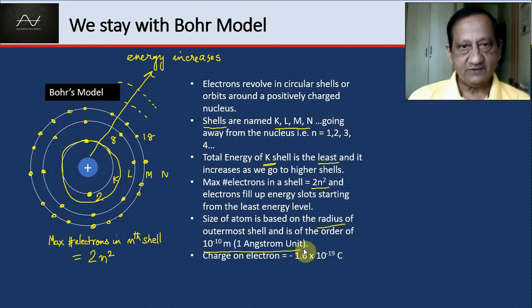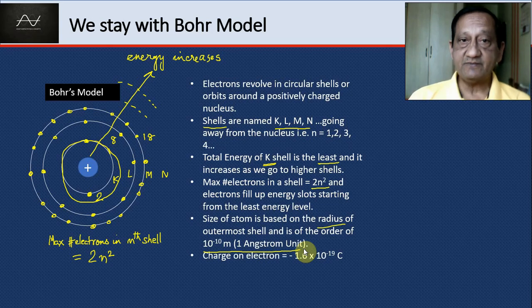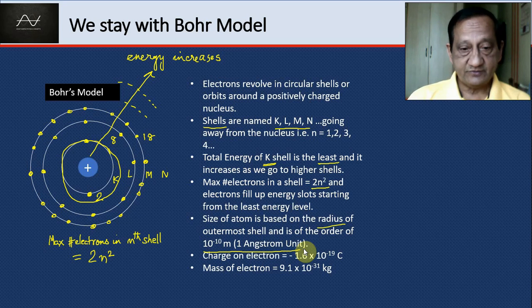The charge on an electron is minus 1.6 into 10 to the power minus 19 coulombs. Mass of an electron is 9.1 into 10 to the power minus 31 kilograms.